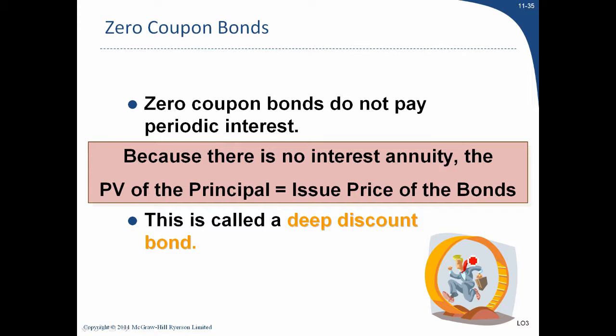A zero coupon bond is similar to the bonds we've looked at except it doesn't pay interest every six months. You buy the bond today and in 10 years you get the face value. As an investor you still need your 12% rate of return. The issue price is just the present value of the principal — a single sum — using your first PV table.